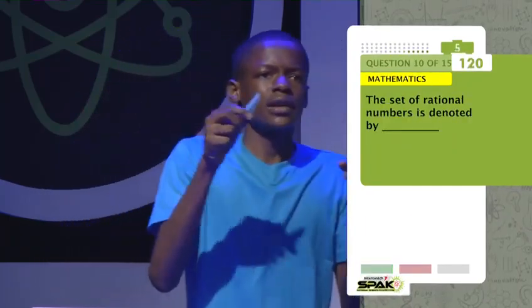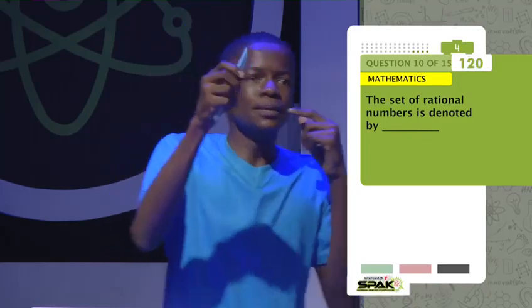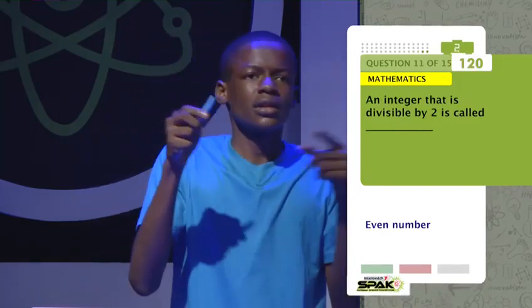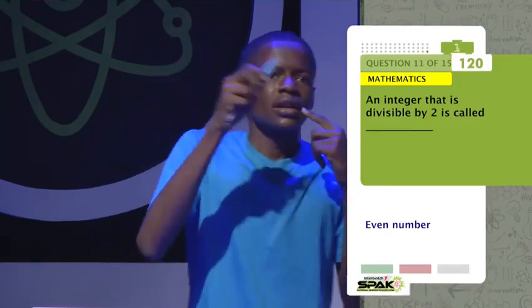The set of rational numbers is denoted by? An integer that is divisible by 2 is called? That's the last question.